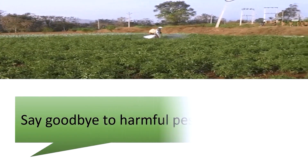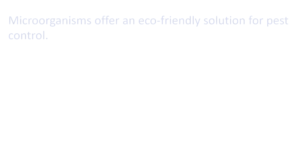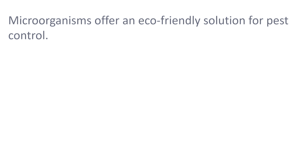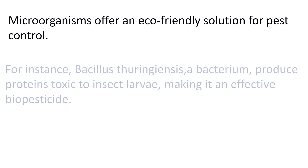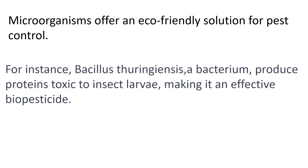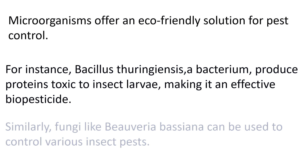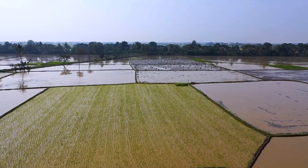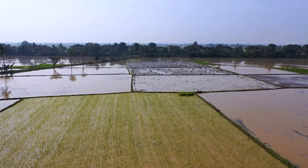Pest Control — Say Goodbye to Harmful Pesticides: Microorganisms offer an eco-friendly solution for pest control. For instance, Bacillus thuringiensis, a bacterium, produces proteins toxic to insect larvae, making it an effective biopesticide. Similarly, fungi like Beauveria bassiana can be used to control various insect pests. These biocontrol agents are safe for our crops, beneficial insects, and the environment.